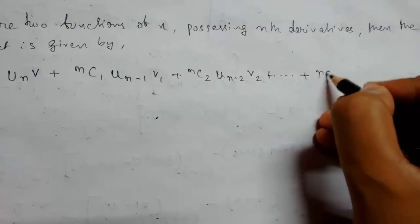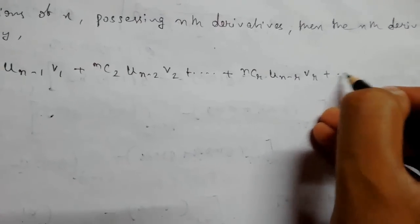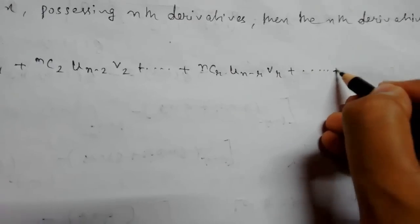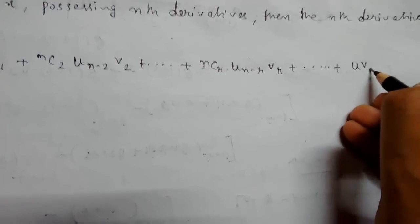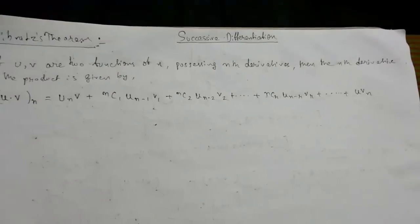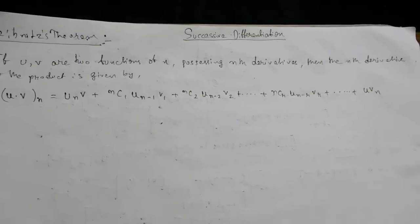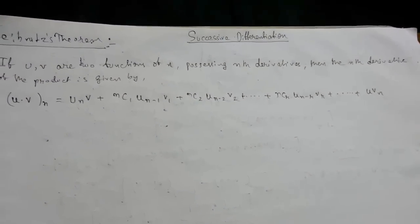this will go on up to nCr·u_(n-r)·v_r plus up to u·v_n. So this is basically the formula how we can calculate product of two nth derivatives by Leibniz theorem.